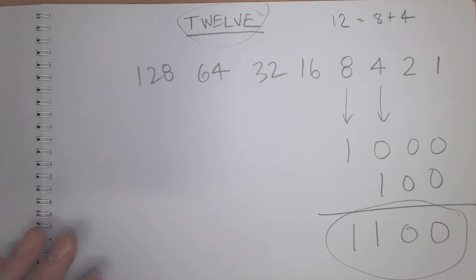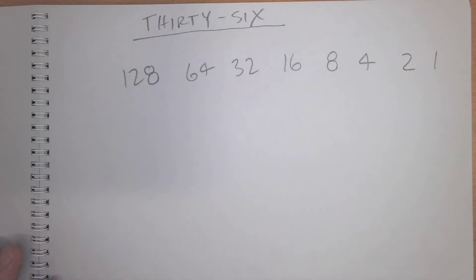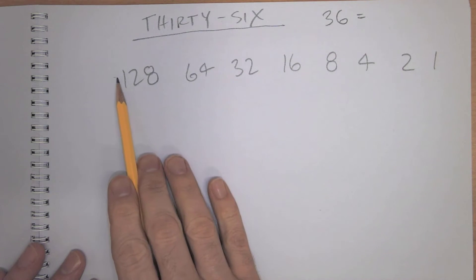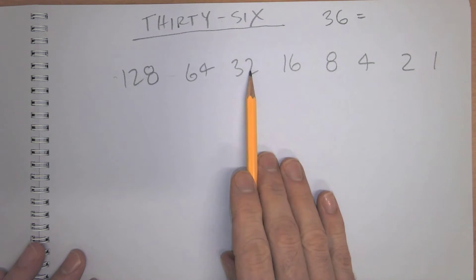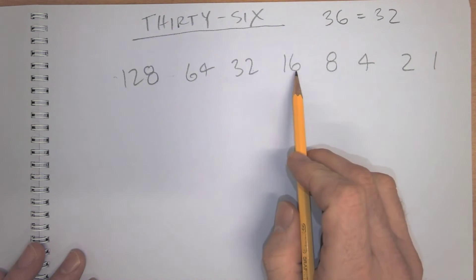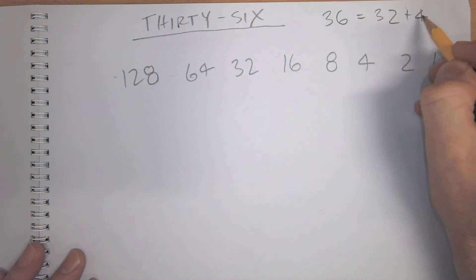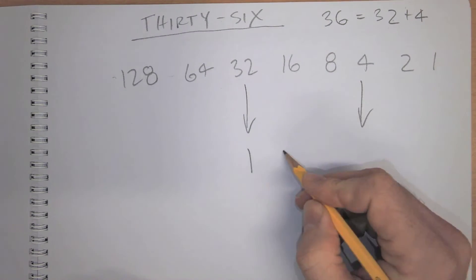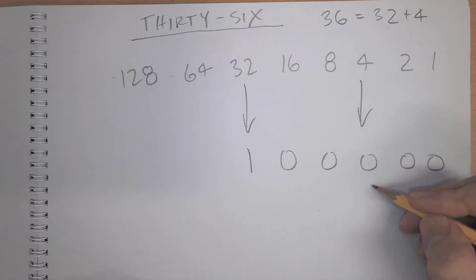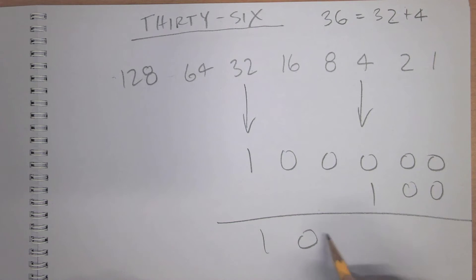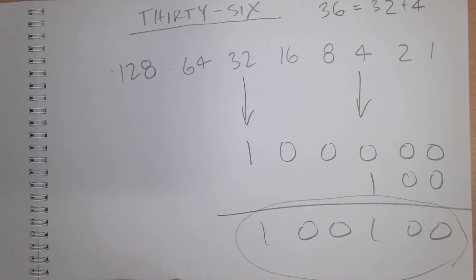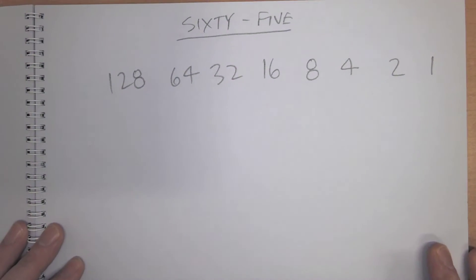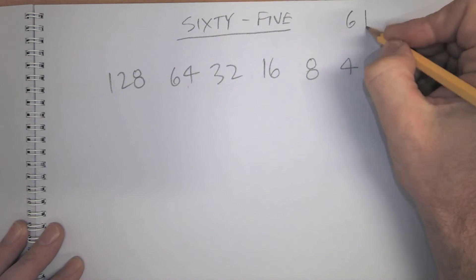Adding those together gives us the binary for 12. Now for 36: I need to find the highest power of two that isn't greater than 36. 64 is too much, so we start with 32. Then 32 plus 4 equals 36, so I take the 32 position and the 4 position — that gives us the binary for 36. Not so hard.